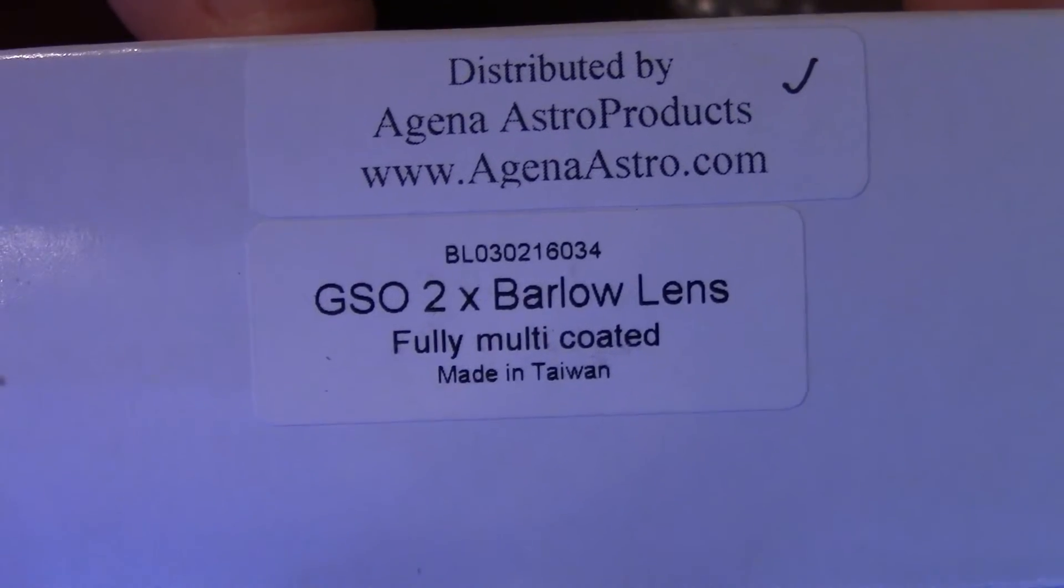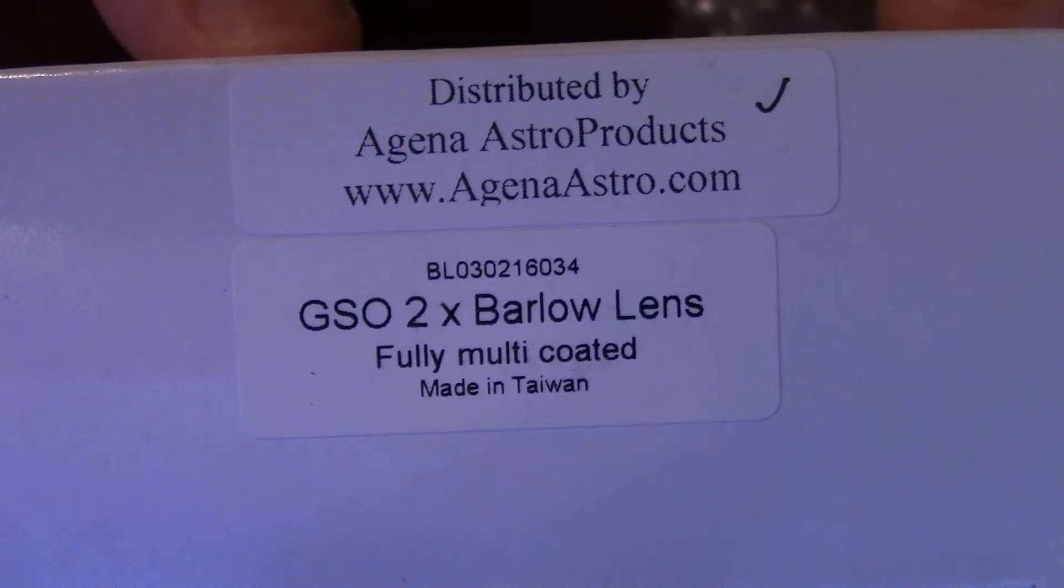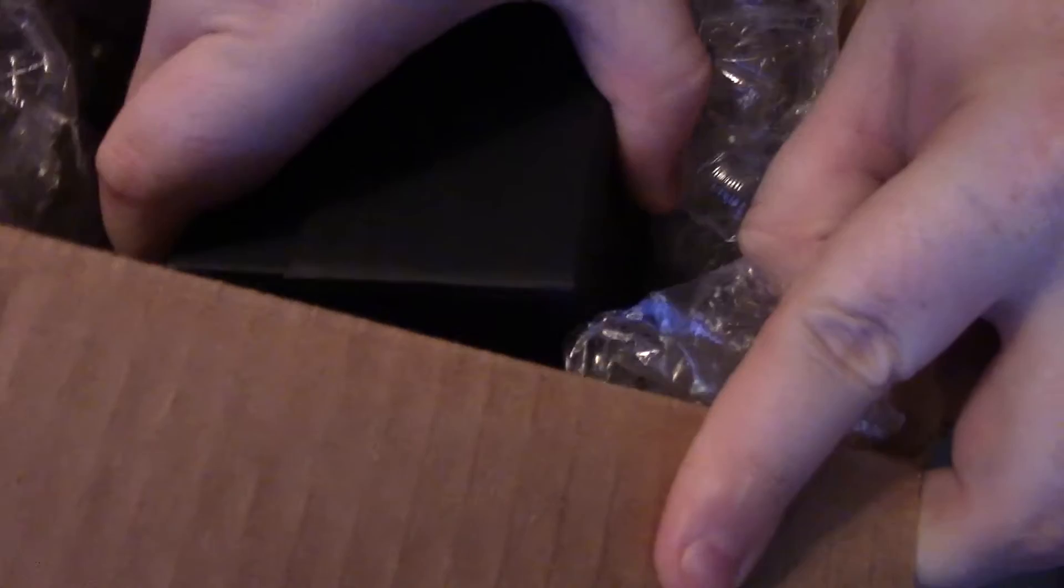This box here is my GSO 2x Barlow lens. And lastly this big black box. This is just an empty box.